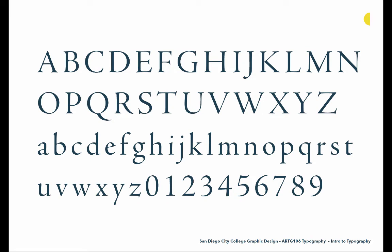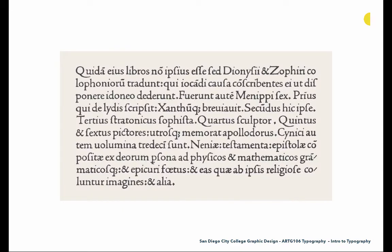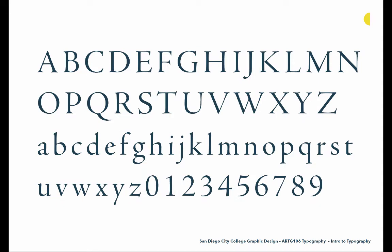Here's Robert Slimbach's revival of Jensen, done for Adobe — you can see how he's looked at Jensen's forms and reinterpreted them. This type originally existed in lead, but now in the digital age, Slimbach has gone back to those original renderings and interpreted them in a new digital way. This process is called revival — going back to a typeface that doesn't exist in a current technology and recreating it for that technology.